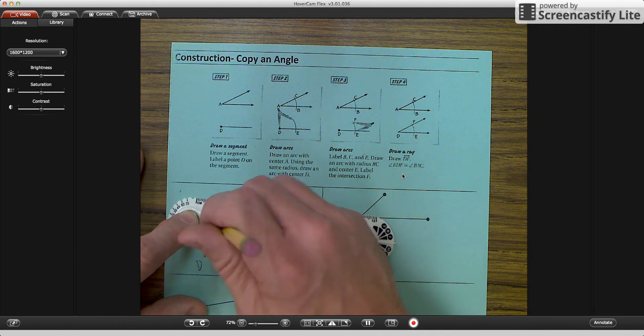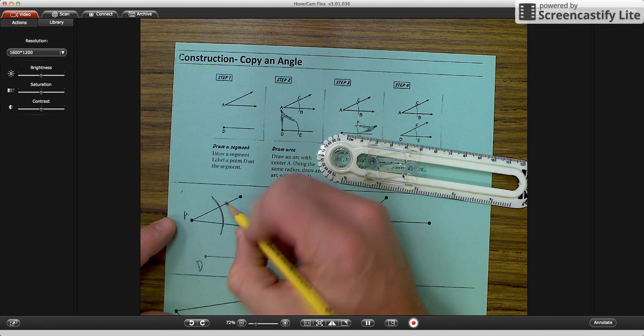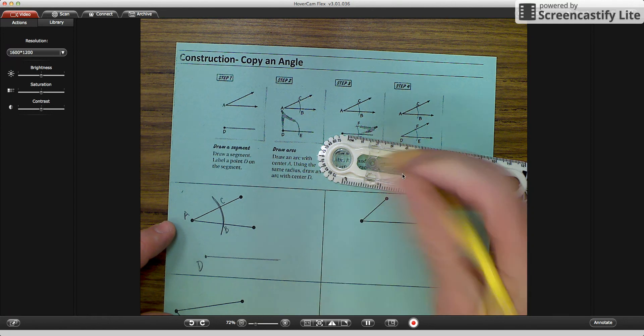The slider can be anywhere it needs to be. The only rule is it has to go through both sides of our angle up top. I'm going to label it C and B down here.